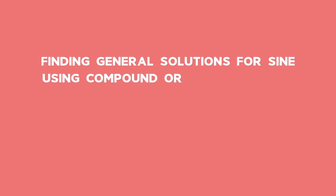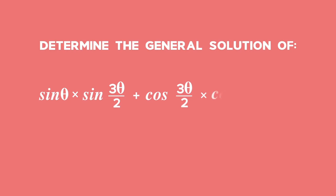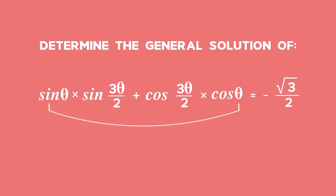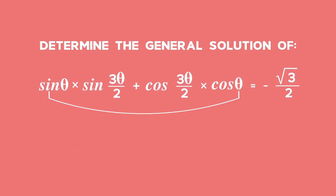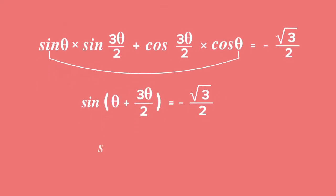In this example, you need to determine the general solution of the equation: sine theta times sine of 3 theta over 2, plus cos of 3 theta over 2 times cos theta, equals negative square root 3 over 2. The left-hand side contains the compound expansion for sine. Hence, we can rewrite the equation as sine(theta + 3 theta over 2) equals negative square root 3 over 2. Simplifying the angles within the brackets, we get sine(5 theta over 2) equals negative square root 3 over 2.